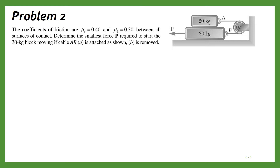This is our next problem. There are two blocks and they are attached with a cable, and this force P is applied. We are given coefficients of friction — static as well as kinetic — and we have to determine the force P required to start the motion of the 30 kg block. Part A: when the cable is attached, and Part B: when the cable is removed.